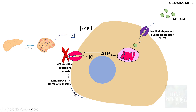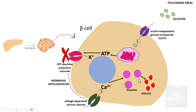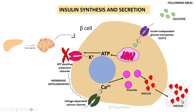What is the effect of membrane depolarization? There is another channel: a voltage-dependent calcium channel. As soon as there is membrane depolarization, the calcium channel gets activated and calcium gains entry into the cytoplasm. Once there are increased levels of calcium in the cytoplasm, granules containing precursors of the hormone insulin are converted to insulin. That results in the synthesis and secretion of insulin, which then comes out of the cell.